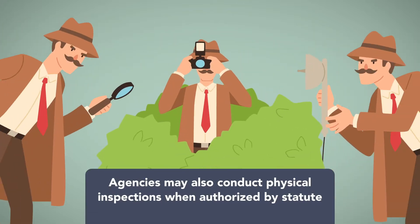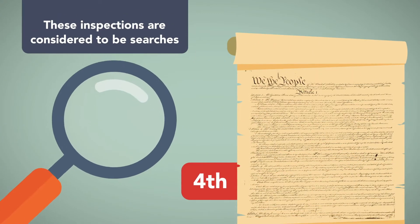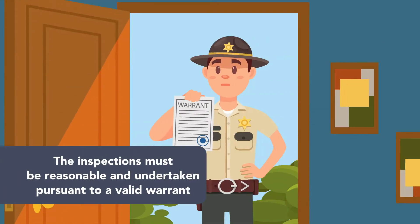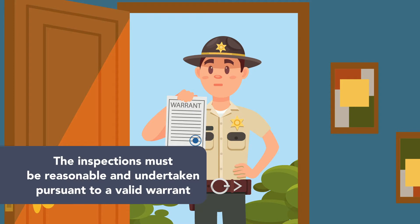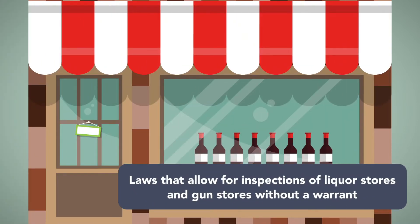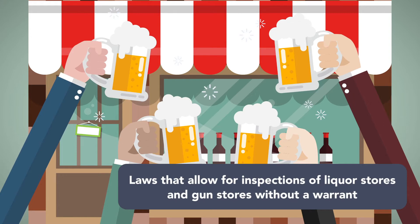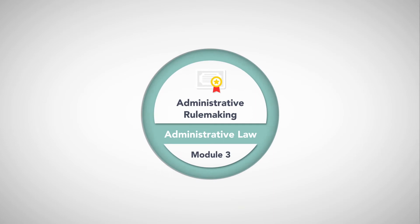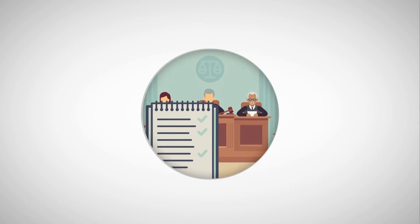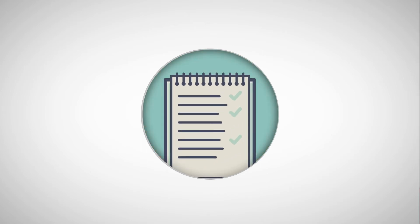Agencies may also conduct physical inspections when authorized by statute. These inspections are considered searches under the Searches and Seizures Clause of the Fourth Amendment, and must be reasonable and undertaken pursuant to a valid warrant where applicable. However, states may pass laws to authorize warrantless searches of businesses that are pervasively regulated — for example, laws allowing inspections of liquor stores and gun stores without a warrant have been upheld as constitutionally valid. Though we introduced rulemaking and adjudication in this module, we'll go into more detail on both in the next two modules, with Module 3 focusing on various types of agency rulemaking and rulemaking procedures.